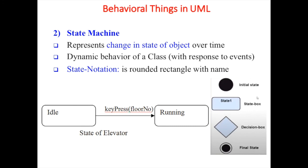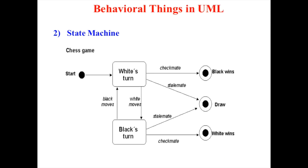State machine represents the change in state of an object over time. For example, a machine can be in an idle state, and when we turn it on it starts its process and is running. States are noted in a rounded rectangle with a name. In a figure we can see the initial state, start state, decision state, and final state. An example is a chess game where we see start state, white's turn, black's turn, white moves, black moves, checkmate state, and draw - this is how you represent the state of a machine in UML.